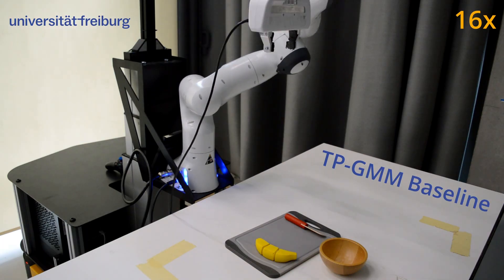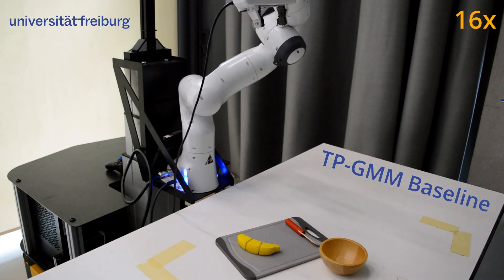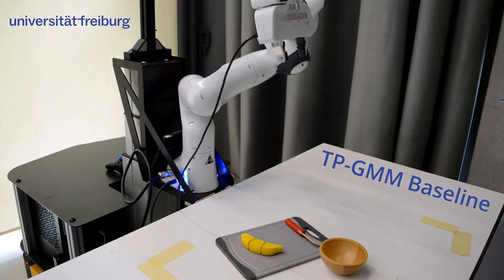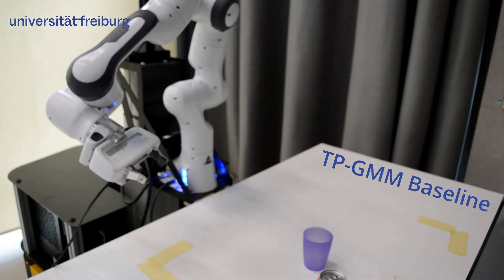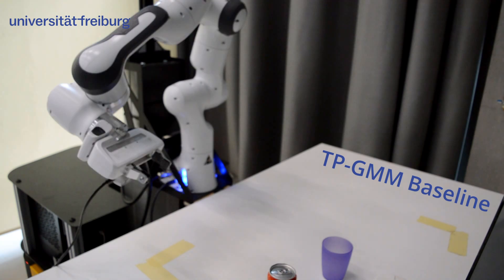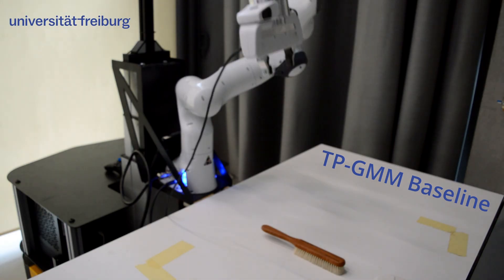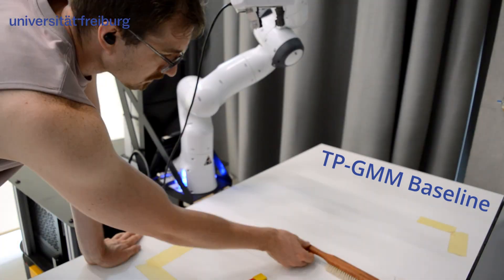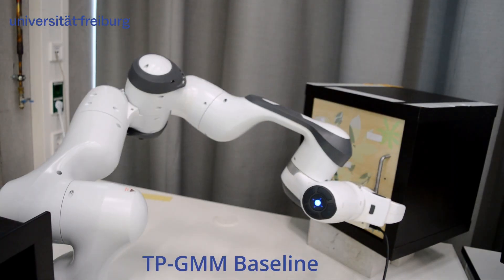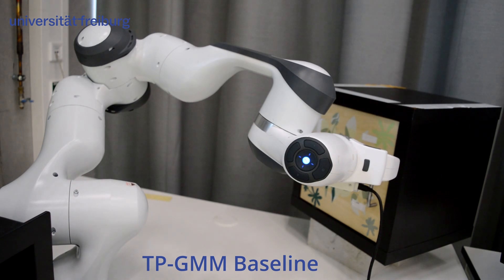The deep learning baselines LSTM and diffusion almost completely fail to learn any of the tasks from five demonstrations. Meanwhile, the TPGMM baseline struggles with gripper timing and pose precision. This leads to failed grasps and to collisions with scene objects.